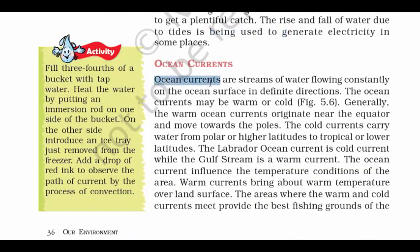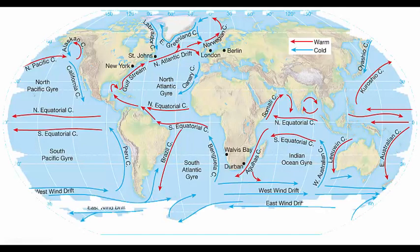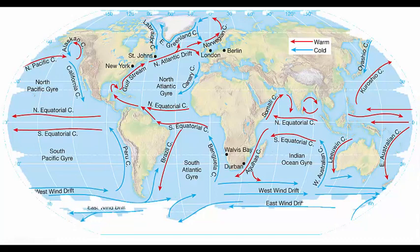Coming to ocean currents: ocean currents are streams of water flowing constantly on the ocean surface in a definite direction. They are of two types: warm ocean currents and cold ocean currents. In this picture, red arrows indicate warm ocean currents and blue arrows indicate cold ocean currents. Warm ocean currents generally originate near the equator, where the sun's rays fall directly, and they move towards the poles. Cold ocean currents are generated near the poles, where it is freezing cold, and they move towards the tropical equatorial area.